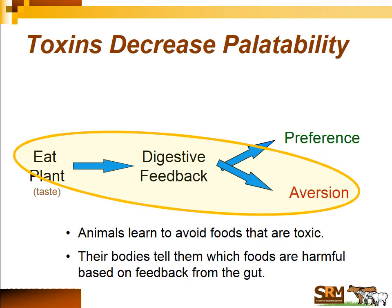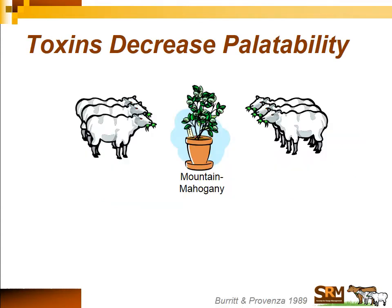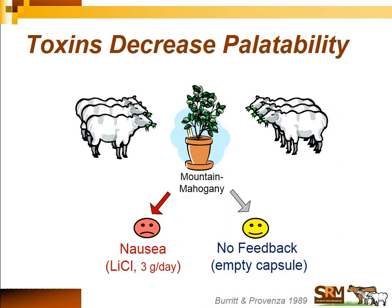Now let's look at the aversion side. Animals learn to avoid foods that are toxic, and their bodies tell them which foods are harmful based on gut feedback. A simple experiment was done in the 80s by Beth Burritt and Fred Provenza at Utah State. Two groups of sheep were allowed to eat mountain mahogany, a perfectly fine food that sheep like. One group received capsules of lithium chloride at about three grams per day; the other got empty capsules. Lithium chloride was used because its main side effect is making a mammal nauseous — well described and commonly used in diet selection experiments.